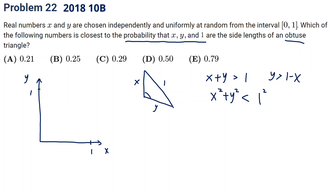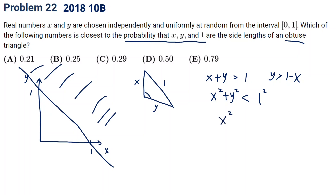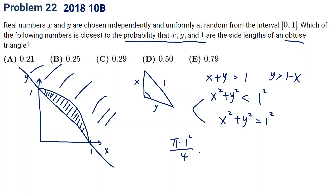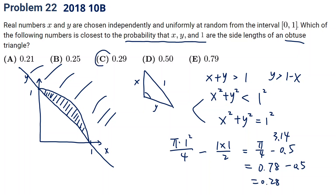Let's draw 1 minus x — the region y greater than 1 minus x is the upper area. Secondly, x squared plus y squared smaller than 1. Since x squared plus y squared equals 1 is a circle with radius 1, smaller than 1 means the inner part. Combining these two conditions gives us a shaded region: a one-quarter circle, so pi times r squared divided by 4, minus the triangle. That gives us pi over 4 minus 0.5, which is approximately 0.78 minus 0.5 equals 0.28. So 0.28 is the closest answer.